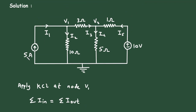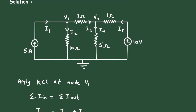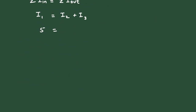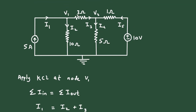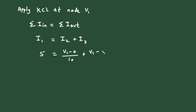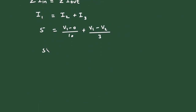Here we can see I1 is equal to 5 ampere. So we write: 5 equals I2, which in voltage form is V1 minus 0 divided by 10, plus I3, which is V1 minus V2 divided by 3. Expanding: 5 equals V1 by 10 plus V1 by 3 minus V2 by 3.